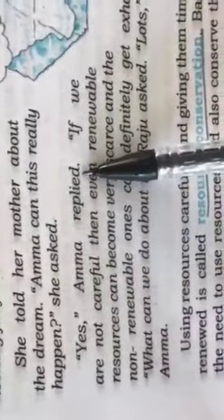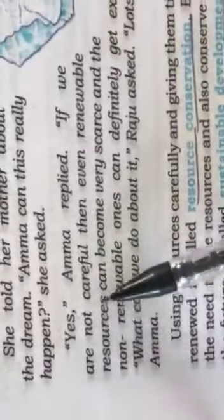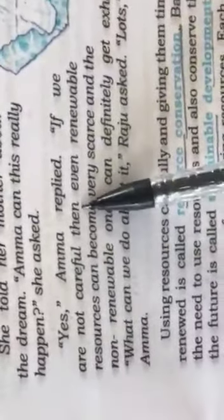She told her mother about the dream. Amma, can this really happen? She asked. Yes, Amma replied. If we are not careful, then even renewable resources can become very scarce and the non-renewable resources can definitely be exhausted. Exhausted means lost or finished.